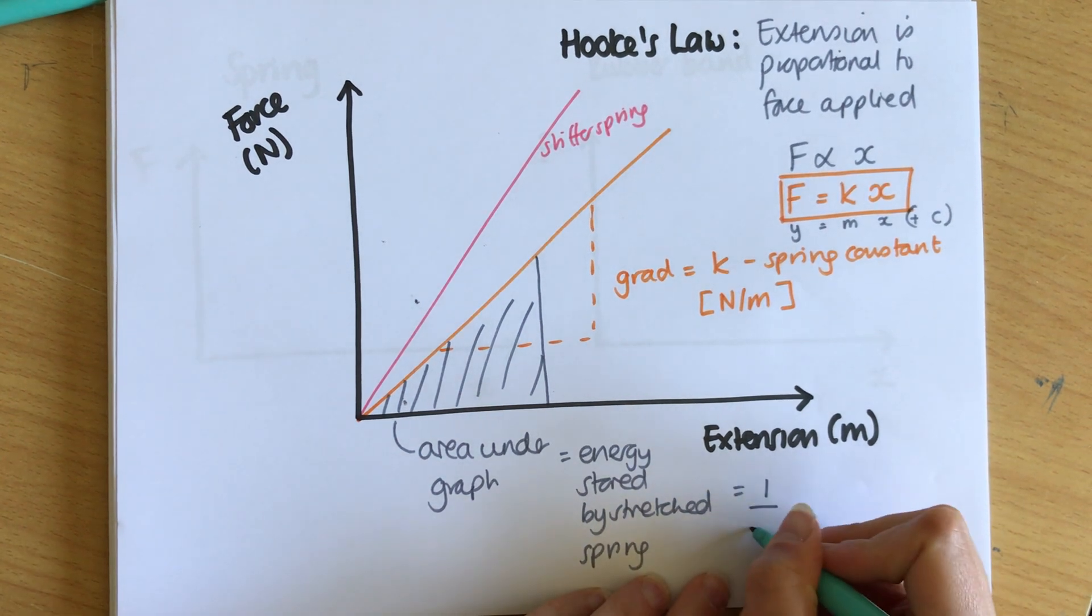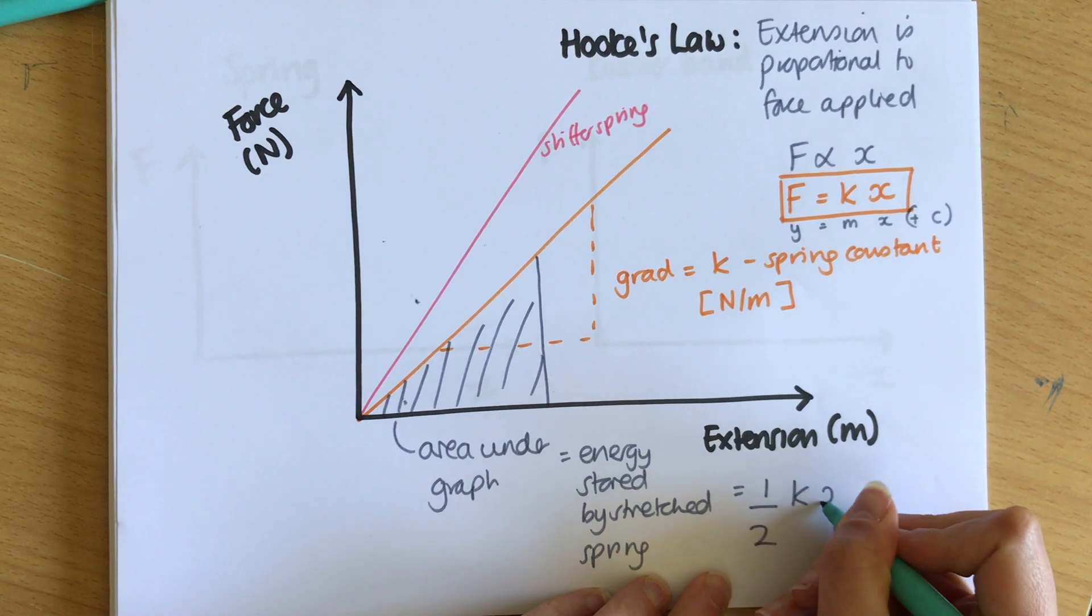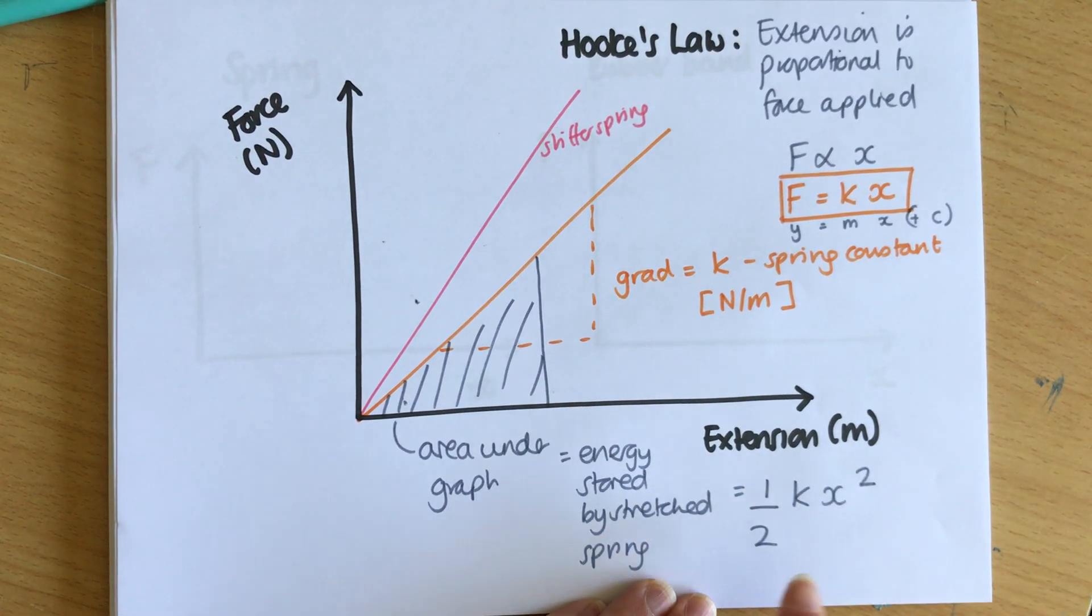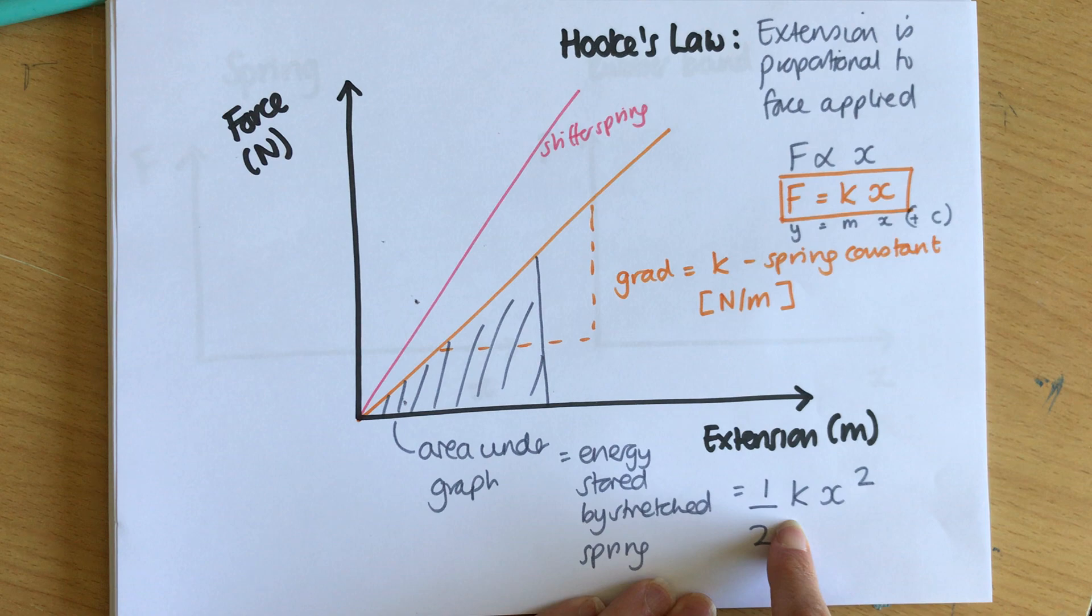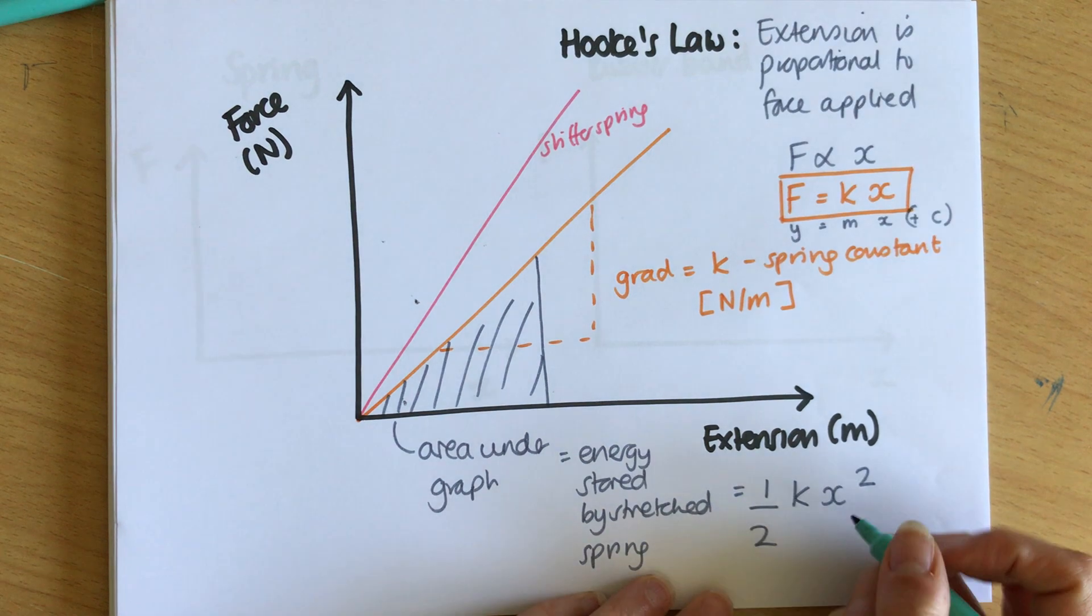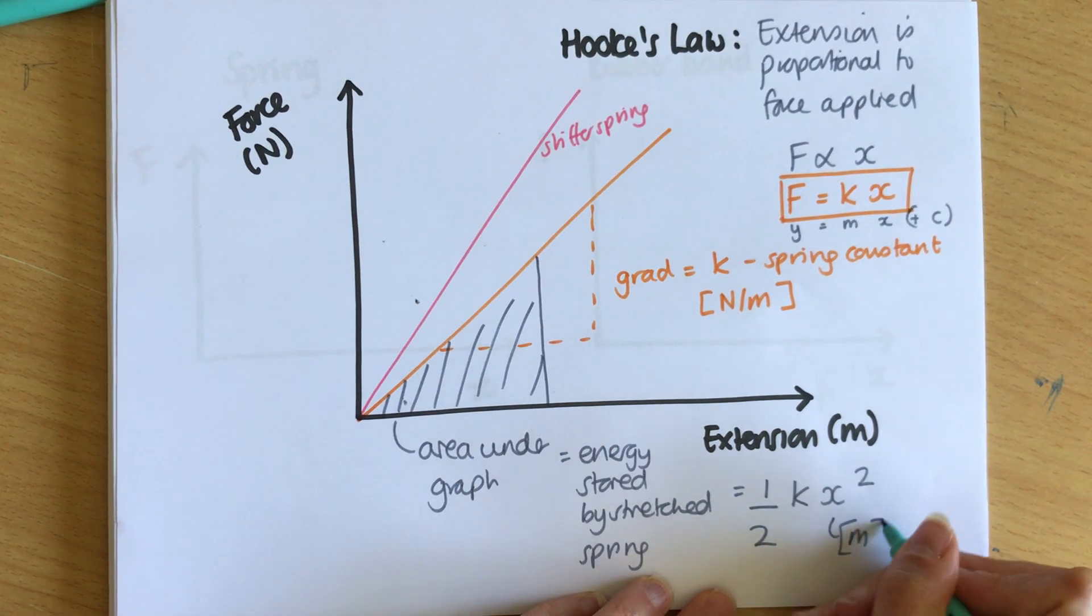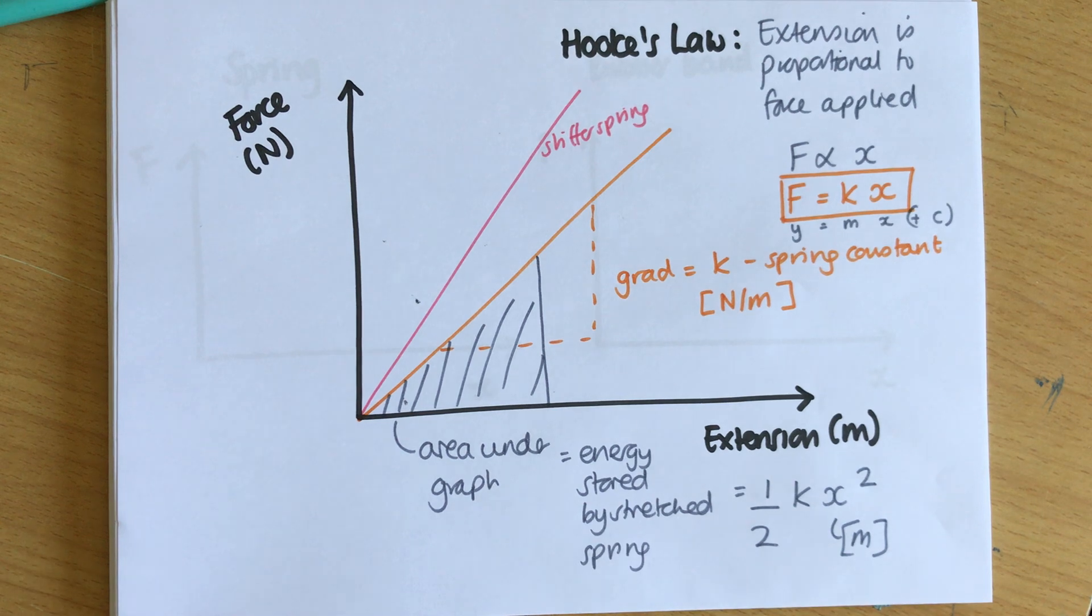So one half times the spring constant times the extension in meters—this needs to be in meters or it doesn't work—squared, and this needs to be a Newton per meter.